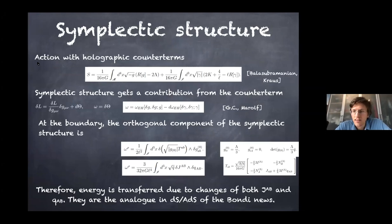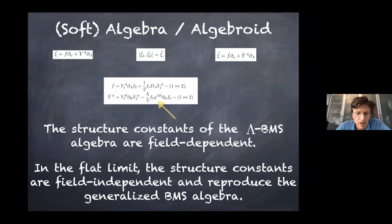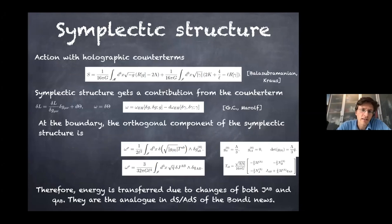Let me now talk about the dynamics. On the question about the interpretation in AdS/CFT: the basic answer is that there is no standard CFT anymore — there is a CFT, but it is coupled to a metric that is fluctuating. So this should be a symmetry group for AdS coupled to an external system.